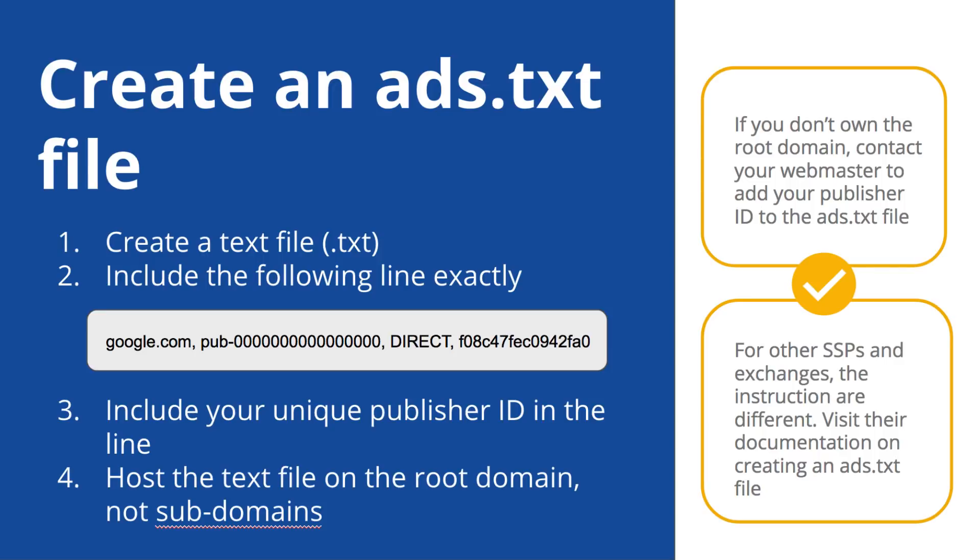For example, google.co.uk would be considered as a root domain, so the ads.txt file for Google would be found at google.co.uk/ads.txt.